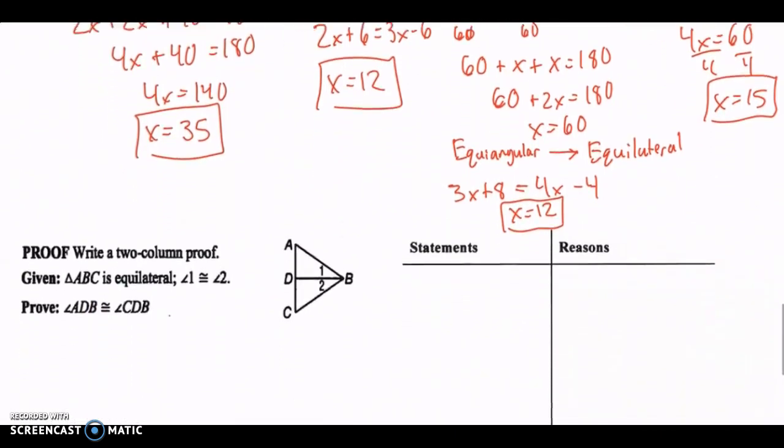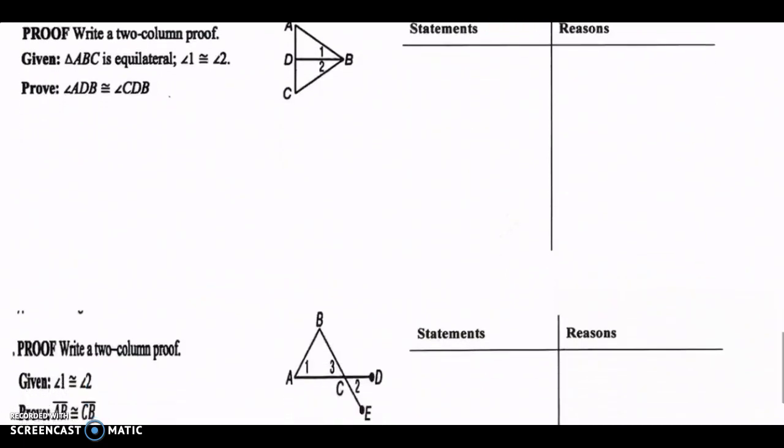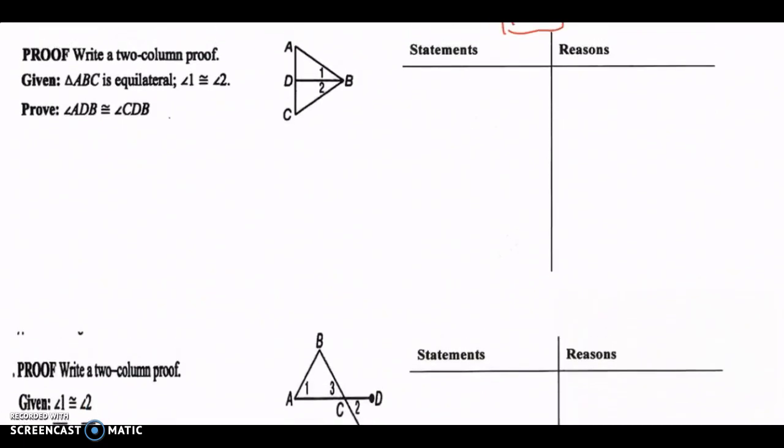Let's move on to the proofs. Feel free to pause the video anytime you want. All right, on to the good stuff. So we have our given: triangle ABC is equilateral. So all the sides are equal, right? I'm just going to mark it all up right there. All sides are congruent. And this is our given.